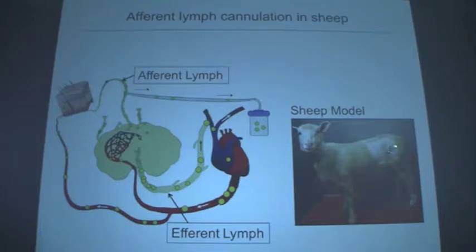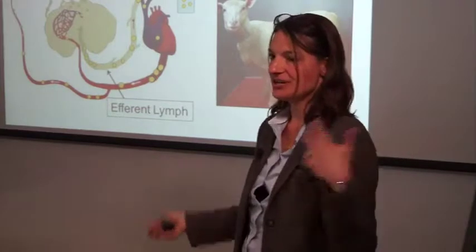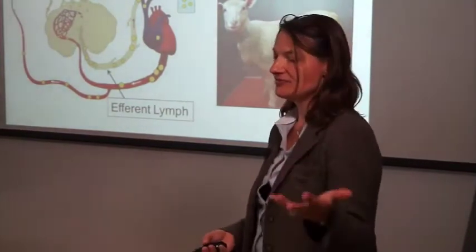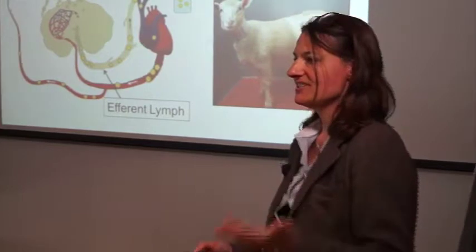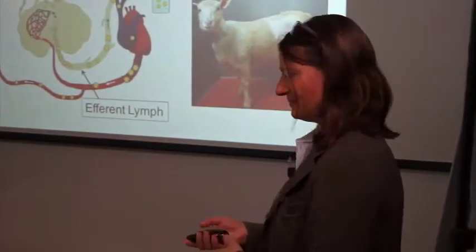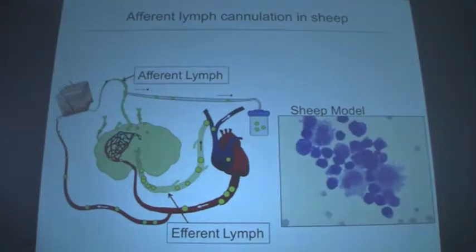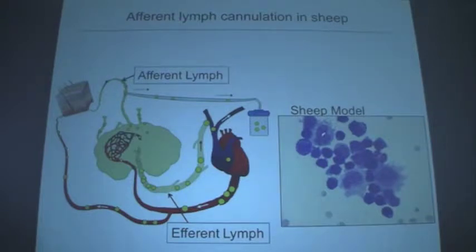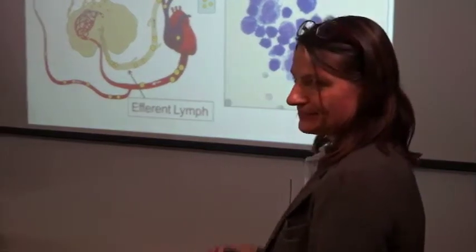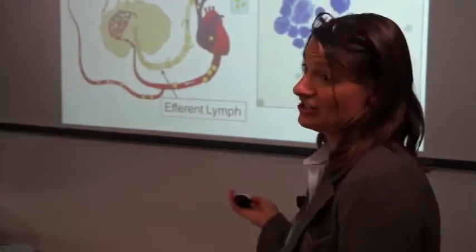The cells from the lymph are mostly lymphocytes, with a few macrophage or dendritic-like cells, and large and small lymphocytes. Occasionally there's a neutrophil. Among the lymphocytes, most are actually T cells. When we looked at which cells are leaving during inflammation, we examined cell output of different lymphocyte subsets per hour.